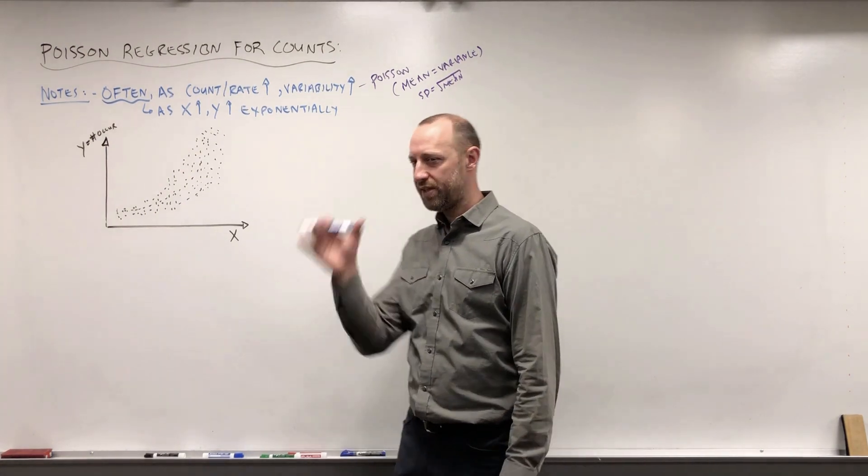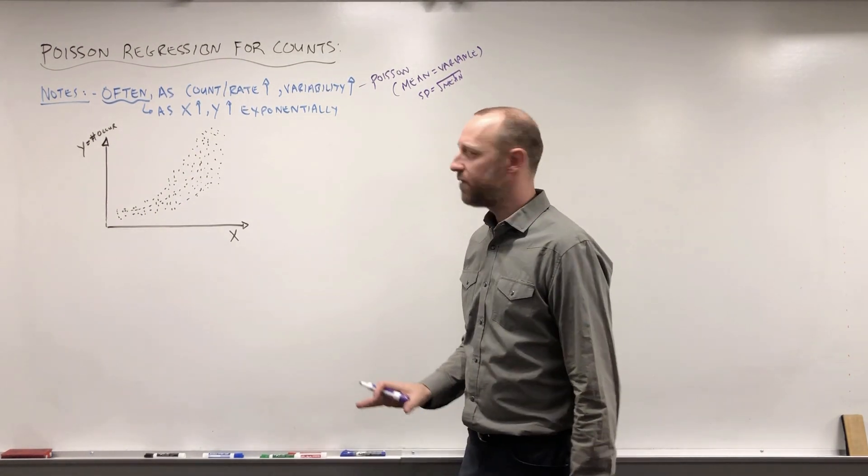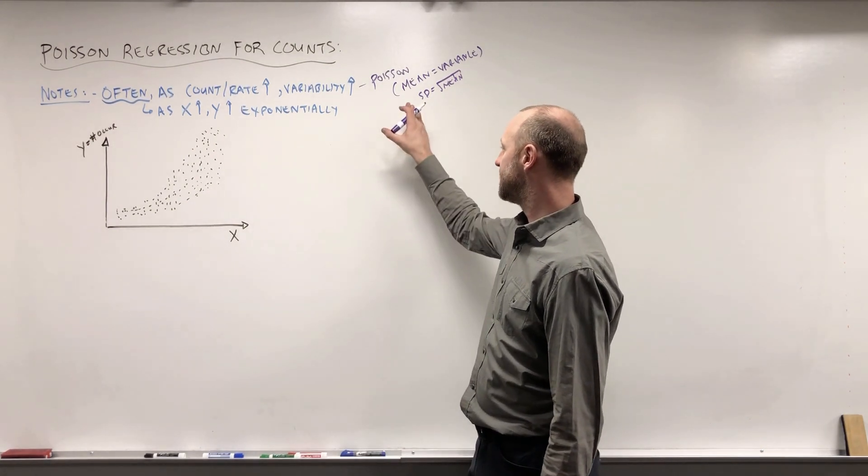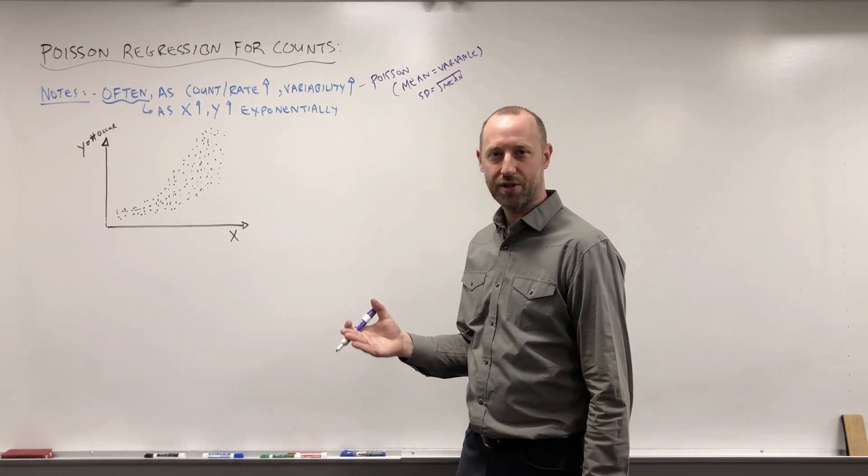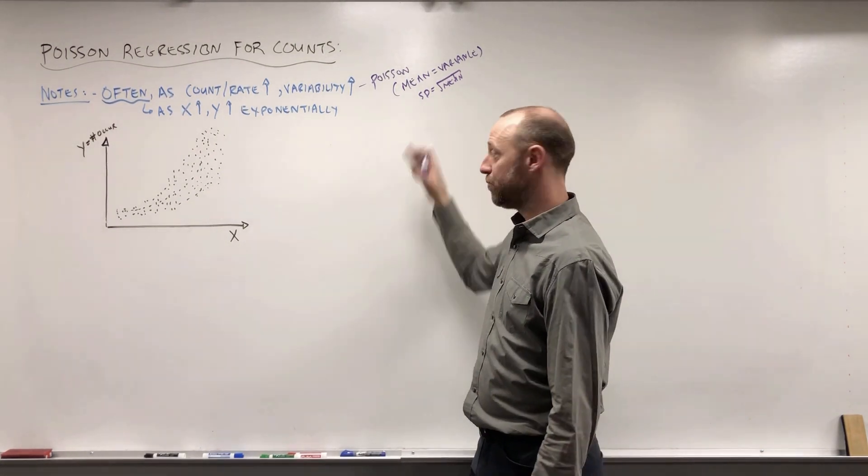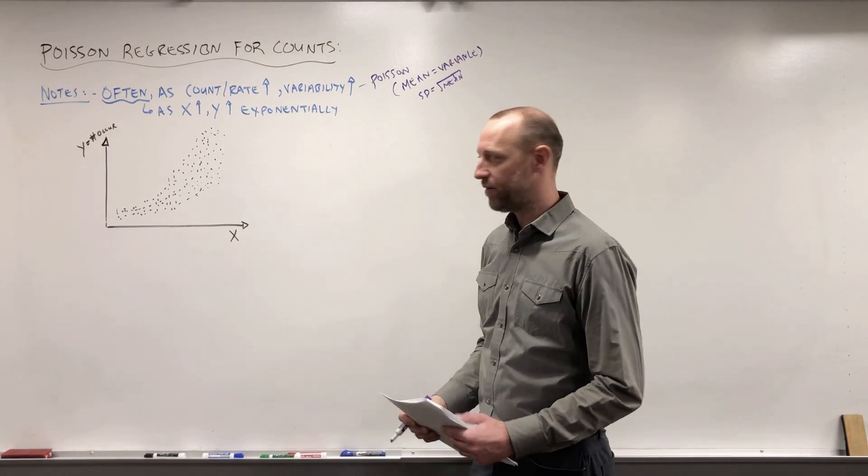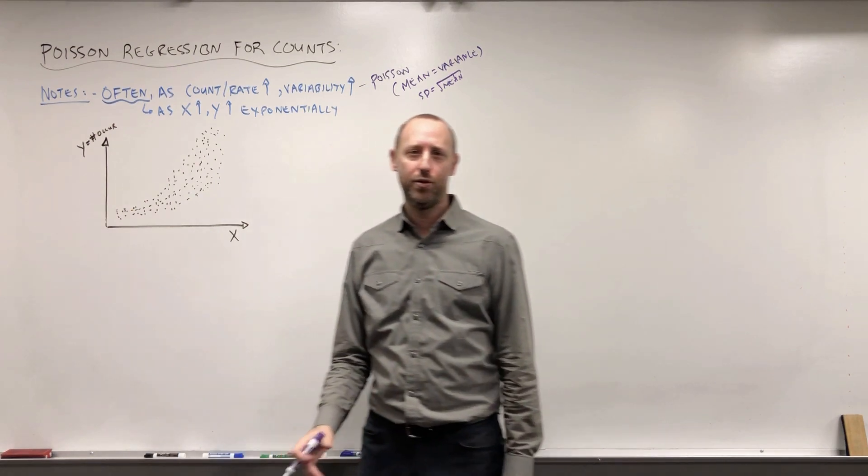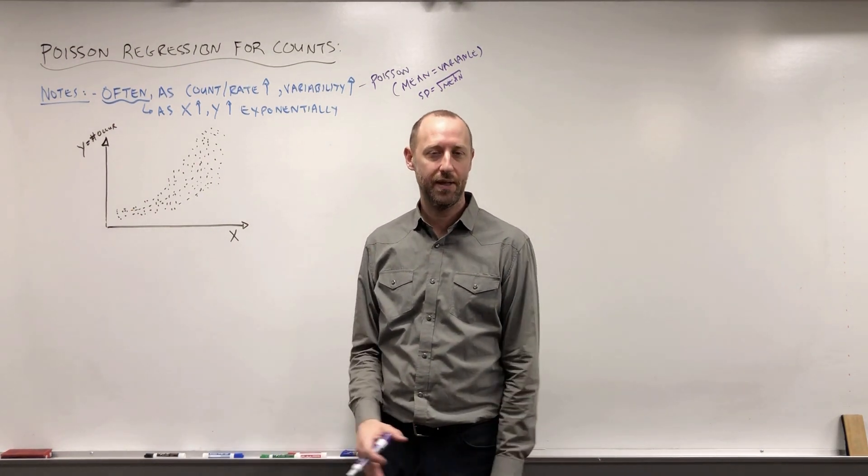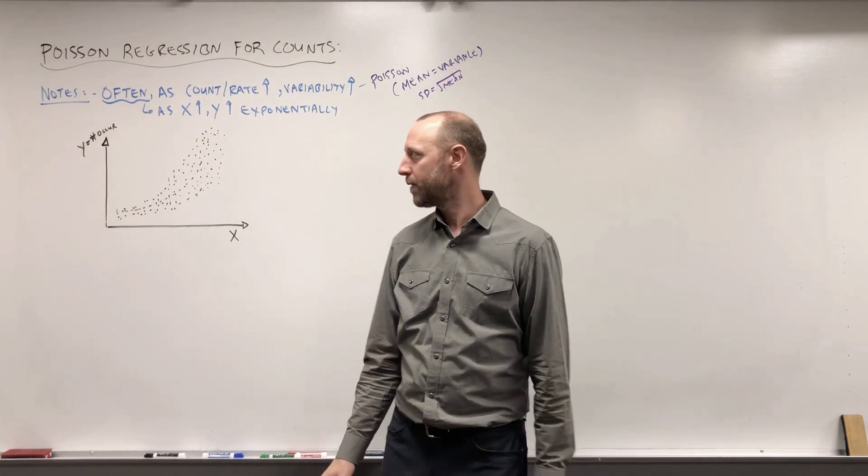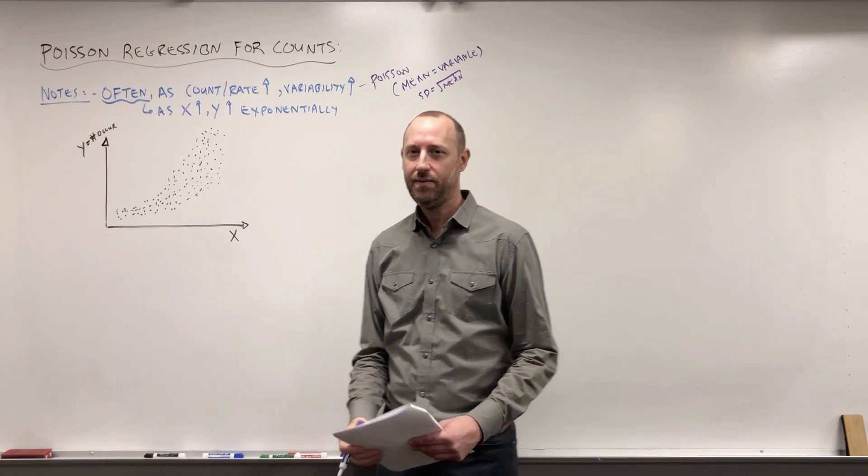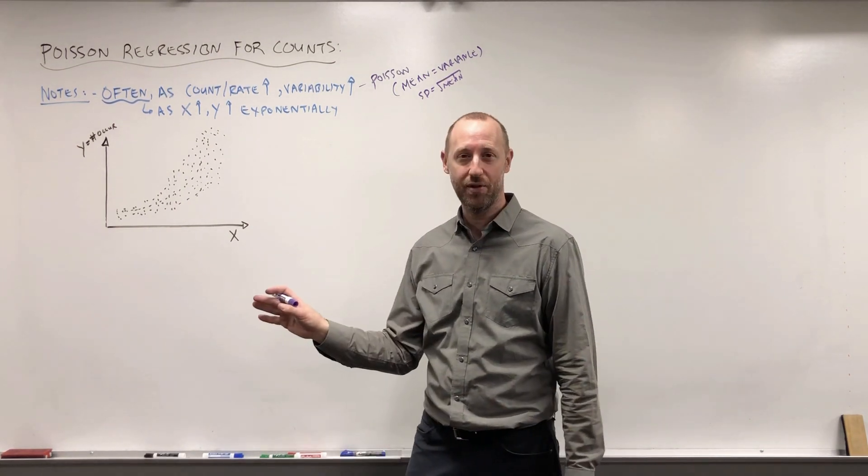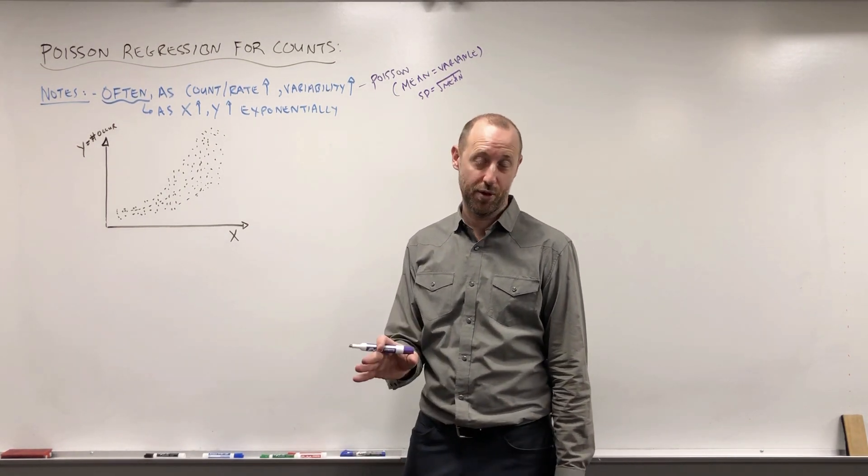But what I want to do is go over a conceptual explanation of why it makes sense that as the mean gets larger, variability or standard deviation would get larger when working with count data. Now suppose we're looking at some outcome, the number of people who show up to the ER in a day. Let's suppose we're looking at a small hospital where on average 10 people show up per day.